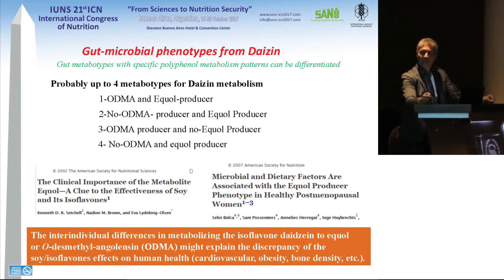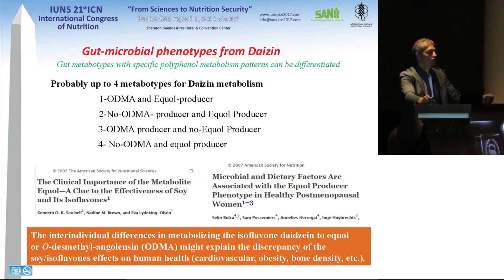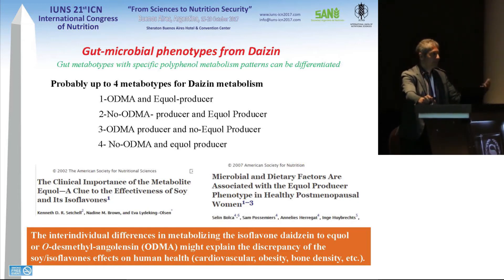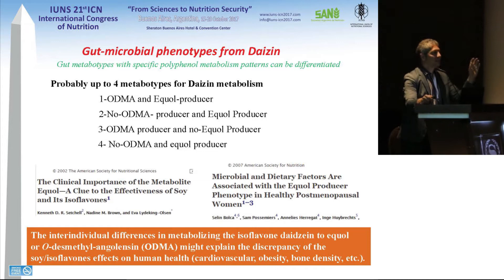Studies show that when we stratify people according to their ability to produce equol or not, we can find quite interesting results for health. This is important for us when we want to develop a functional food and prove that it is functional — it is very difficult because how can the legislator take into account the fact that this food is functional for someone but not for another? Maybe in the future people will know their metabotype status and will know if a functional food is beneficial for them. When you stratify people according to their metabotype, you can find quite good correlations with health biomarkers like cardiovascular risk, obesity, and bone density.